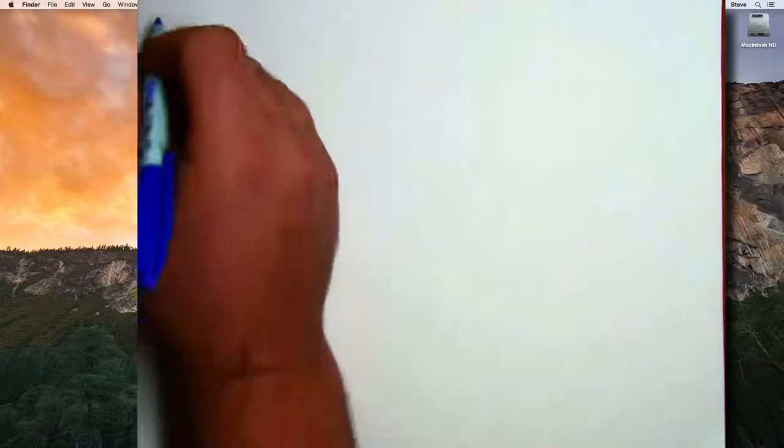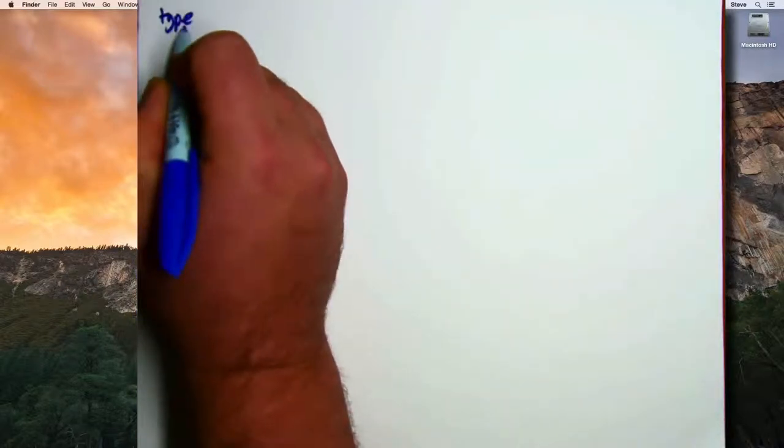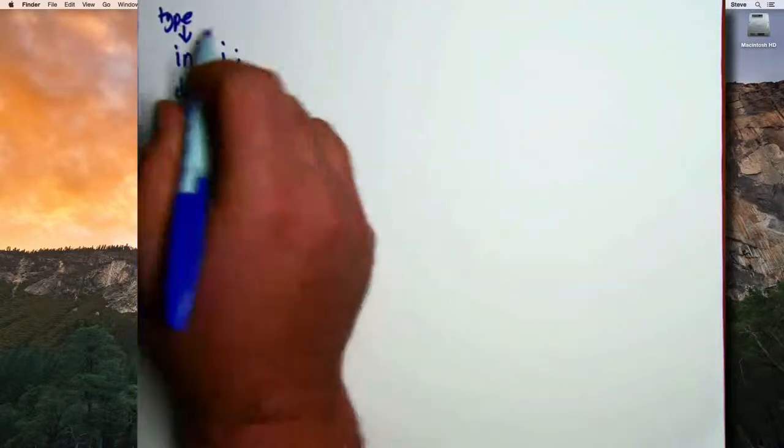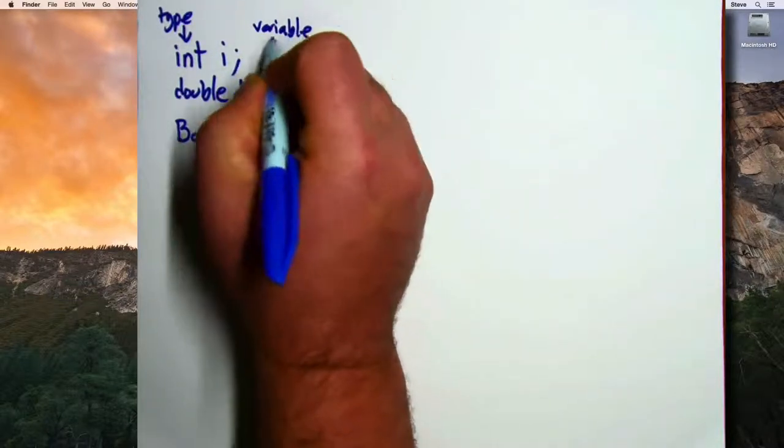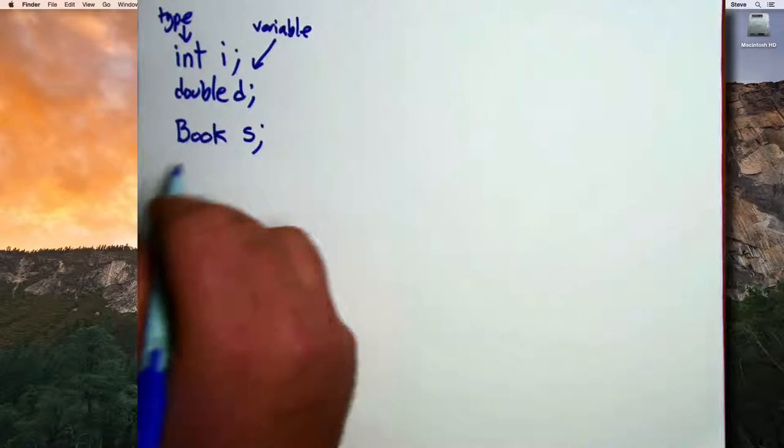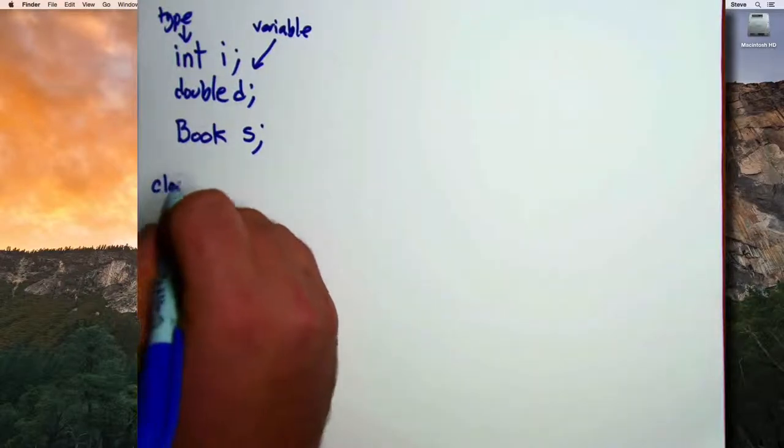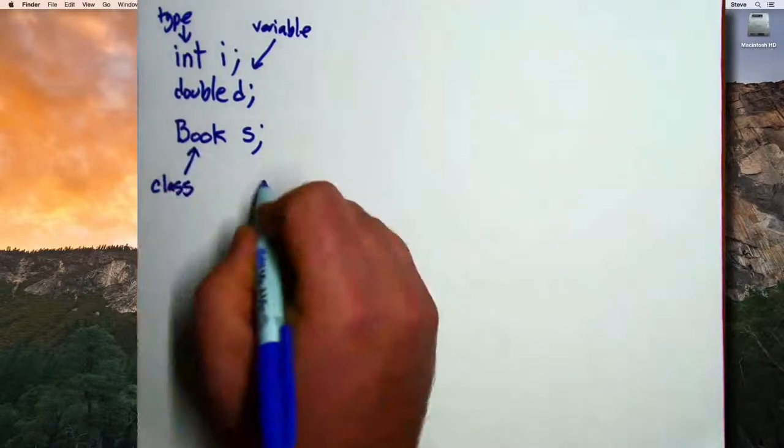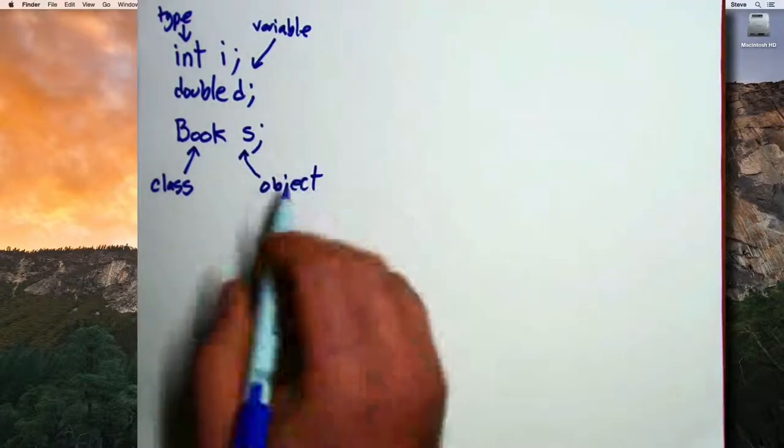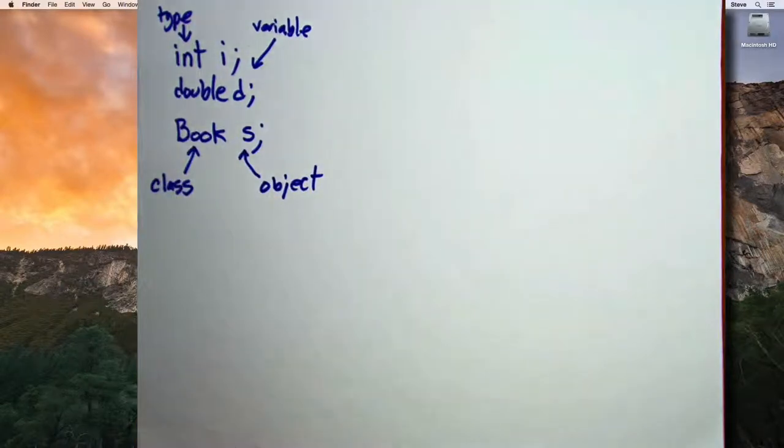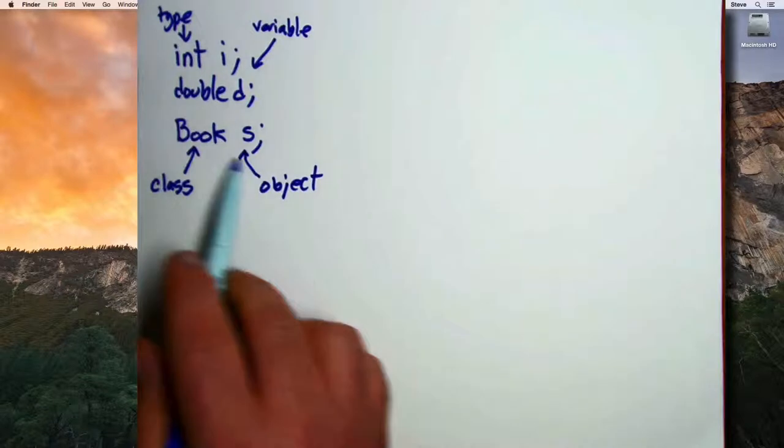In C++ language, we would call the int or double a type and i or d a variable. And you could use that language with these terms, but more commonly, we'll refer to book as a class and s as an object. So an object is an instance of a class. A class will be the definition, and then when we use that definition to actually create something, we'll refer to those as objects.